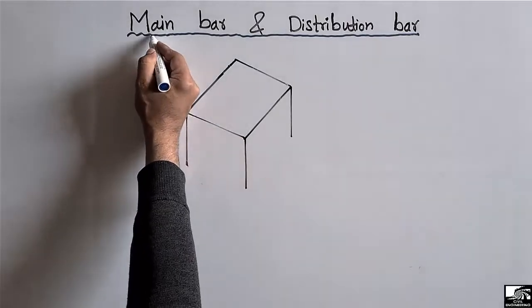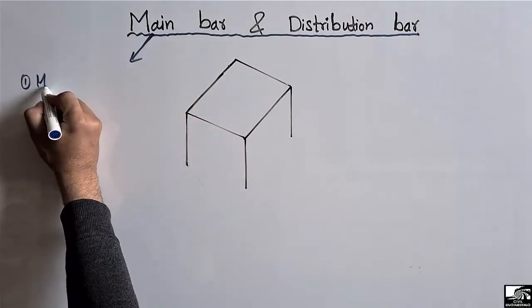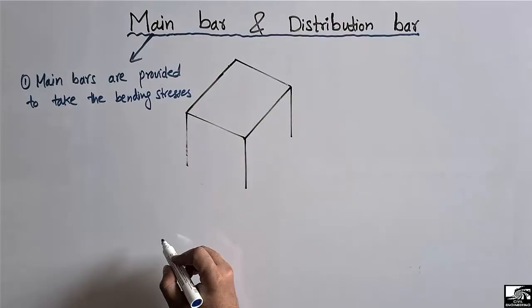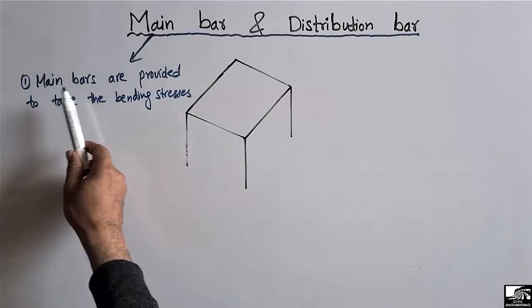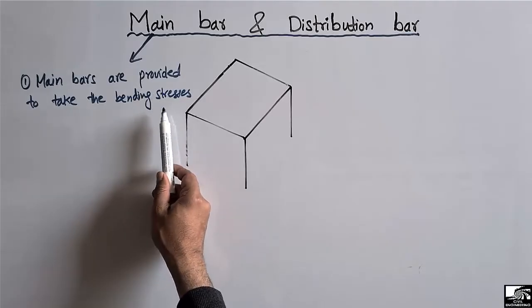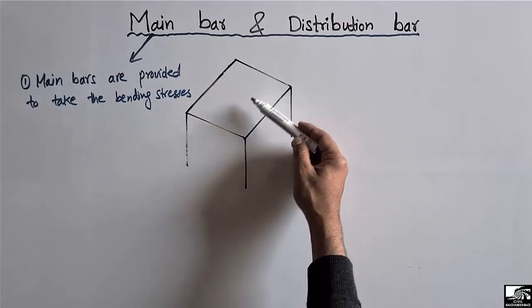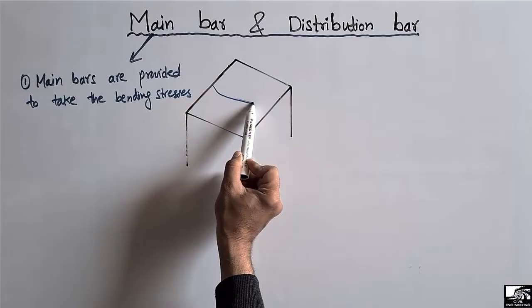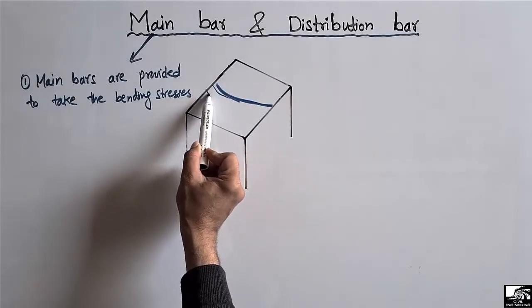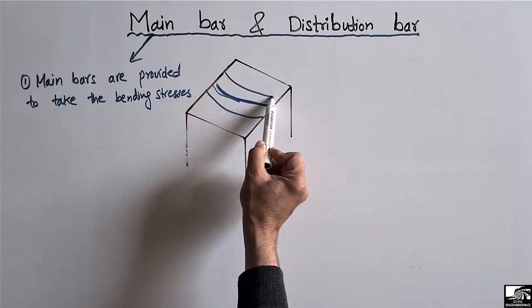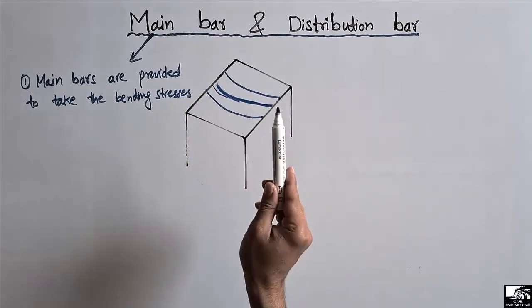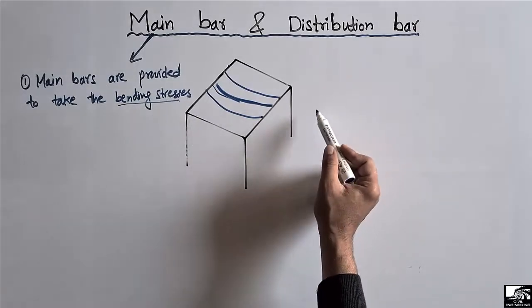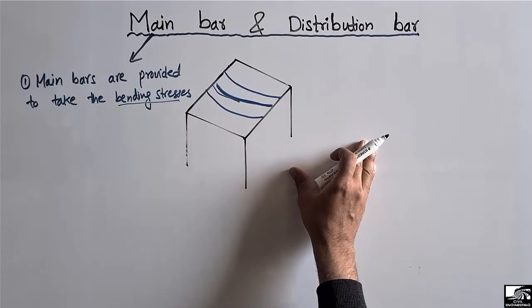So the first difference is: the main bars are provided to take the bending stresses. Mostly the bending stresses are resisted by the main bars. If I consider any slab, when the slab deflects, we provide the main bars in order to take the bending stresses. So the first reason to provide the main bar is to take the bending stresses.